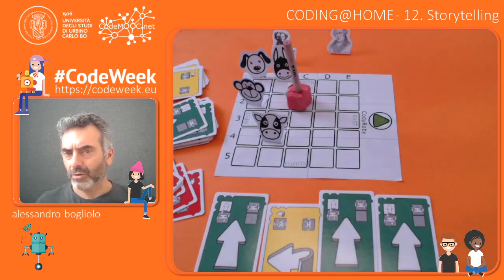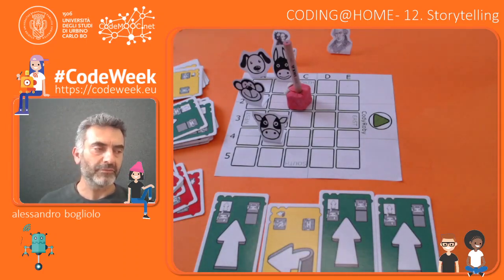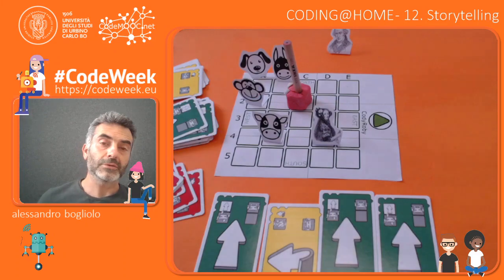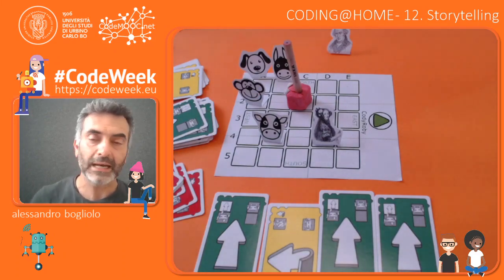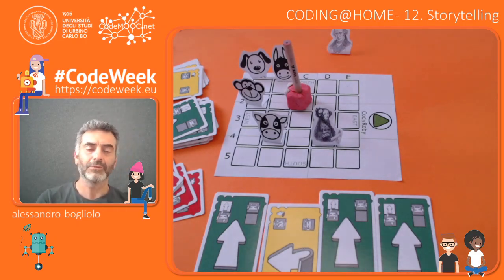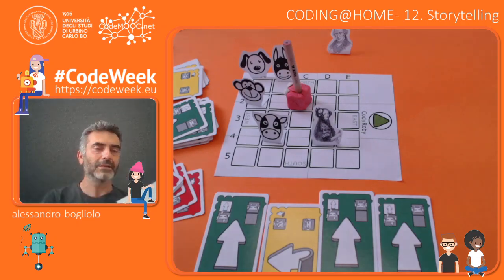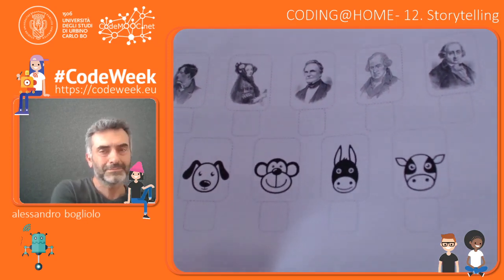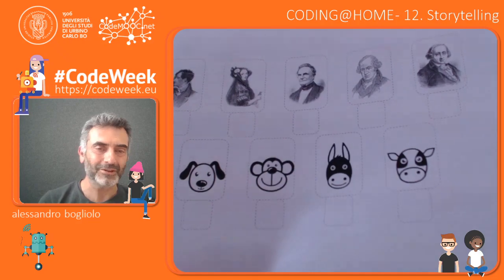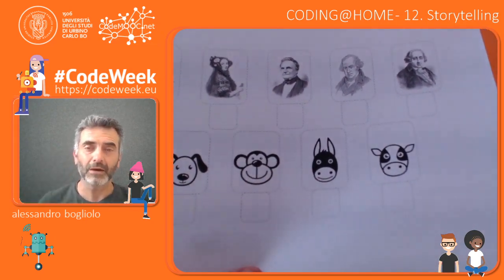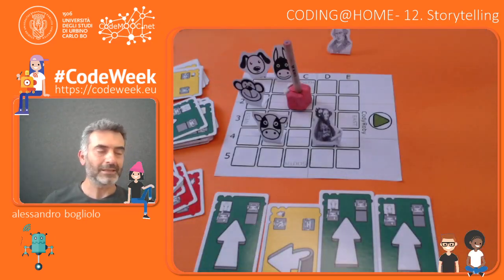Instead of using invented characters or story elements, I could also use true historic figures — like, for instance, the ones from the history of computing. Ada Lovelace is for sure a person we already met, so I expect you to know her. In case you want to use the same characters I'm showing now, you can print them out and cut and fold them to make them stable on the checkered board. This is a sheet of paper you can download and print from the web — it is associated with this video today.